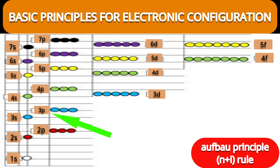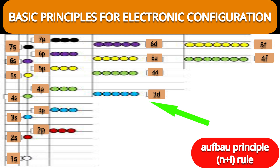For 3p: 3 + 1 = 4, which is higher than 3, so energy of 3p is higher than 3s. For 4s: 4 + 0 = 4. Both 3p and 4s give 4, but 3p has the lower principal quantum number, so 3p is lower in energy than 4s. For 3d: 3 + 2 = 5. Since 5 is larger than 4, the energy of 3d is higher than that of 4s.